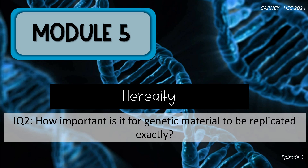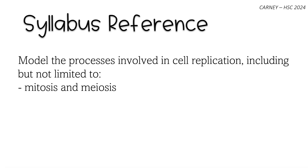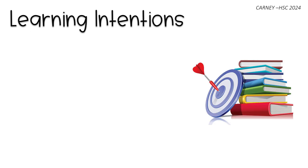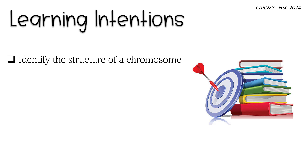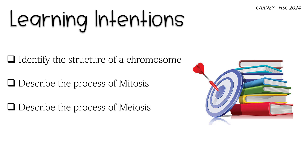Welcome to Episode 3 of Module 5, Heredity. We're finishing up Inquiry Question 2, looking at how important genetic material needs to be replicated exactly. The syllabus reference for this video is to model the processes involved in cell replication, including but not limited to mitosis and meiosis. Our learning intentions are to identify the structure of a chromosome, describe the process of mitosis, and describe the process of meiosis.